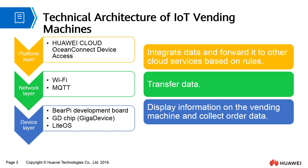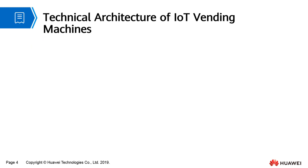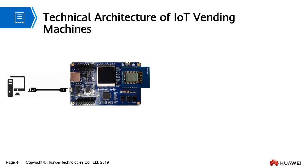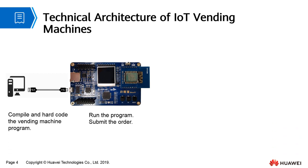The man-machine interaction for the vending machine is achieved by the BarePi development board, which is connected to a PC by using a USB cable. On the PC, use IoT Studio to compile the project and hard-code it to the development board. Then run the program and press F1 and F2 to add the product to the shopping cart and submit the order.